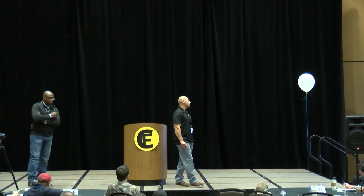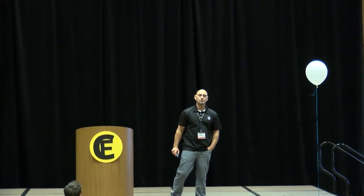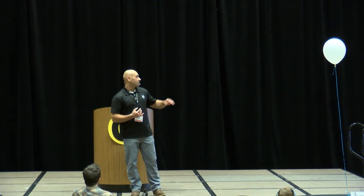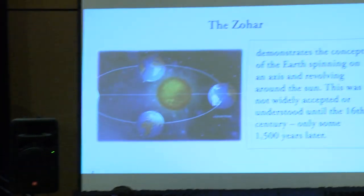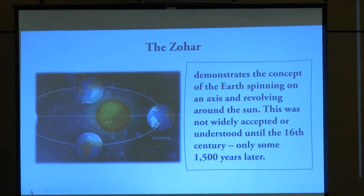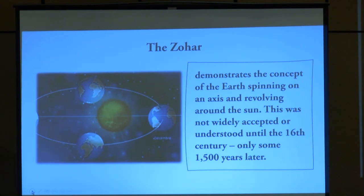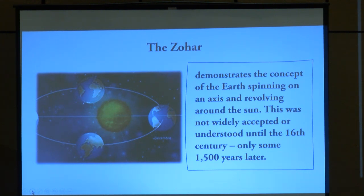One thing most people do not talk about is the Zohar. The Zohar is Jewish mysticism — it's Kabbalah. It is pretty much every aspect and realm of what is behind everything there. It is a satanic agenda. They were pumping out in the Zohar 1,500 years before the Copernican Revolution. They were writing specifically about how the Earth spun on its own axis and that the Earth was a globe.